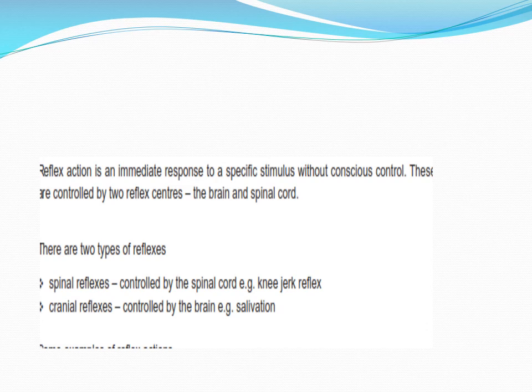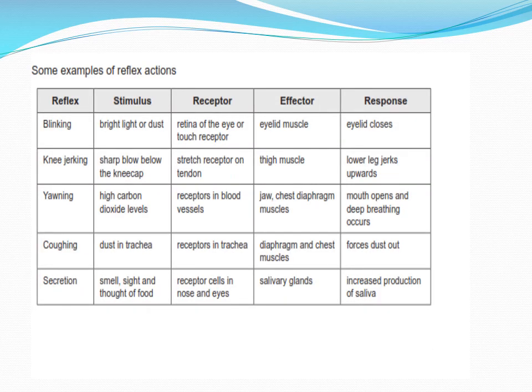Reflex actions are controlled by two reflex centers: the brain and the spinal cord. Spinal reflexes are controlled by the spinal cord, like knee jerks. Cranial reflexes are controlled by the brain — for example, salivation at the sight of food is a cranial reflex, meaning it comes directly from the brain. Examples of reflexes include blinking, knee jerk, yawning, coughing, and secretion. In these, the receptors detect stimuli and effectors show the response. These occur automatically — the conscious part of the central nervous system is not involved and they are not under our voluntary control.